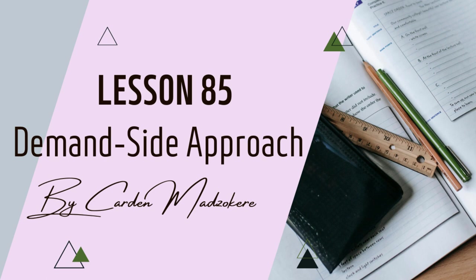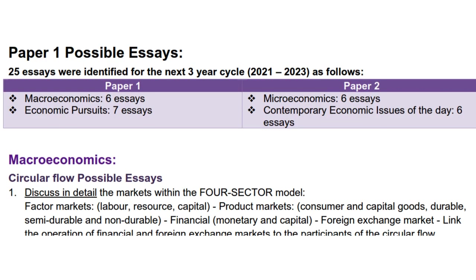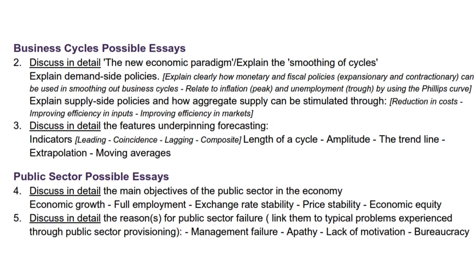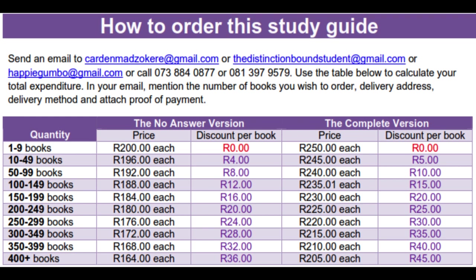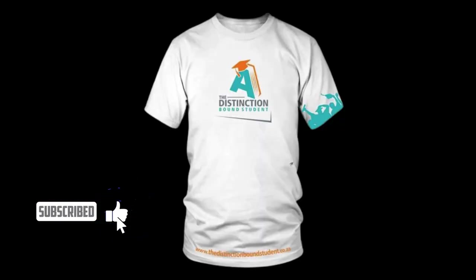The previous lesson was an essay-type question and also this one is an essay-type question as well. Remember we have 25 possible essays and they are all listed in this book from page 396 to page 398. If you want to purchase the book, call us on 0738840877 or email us at thedistinctionboundstudent@gmail.com. Complete versions cost 250 rand while no-answers versions cost 200 rands. Please comment, like and subscribe to our channel, and hit the notification bell for new videos.